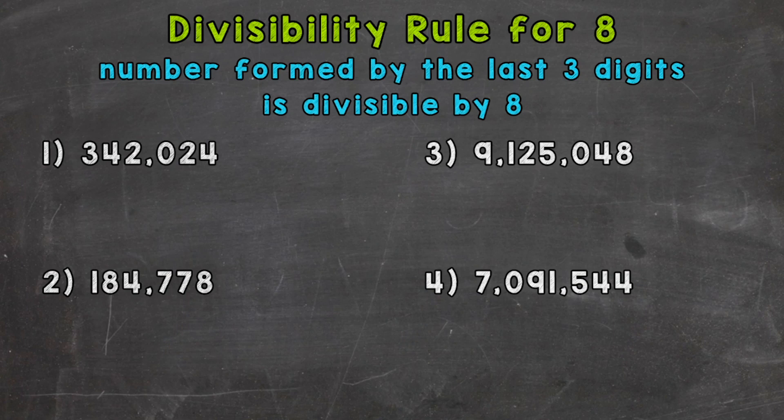When we're talking divisibility, that just means that we're checking to see if we can divide without getting a remainder, so the given numbers work out exactly.